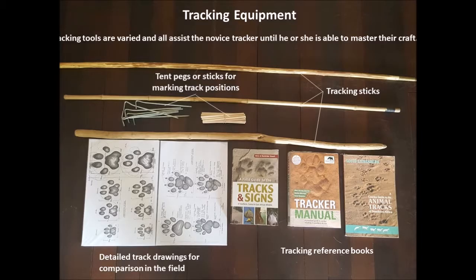Other tools to consider are tracking tools. Many people are interested in tracking — you might want to use tracking sticks for pointing out, circling, and measuring tracks, for example stride length. You might also use pegs to indicate the position of individual tracks. Reference books and field guides help with identification, and you might want a series of drawings to scale of tracks where you can write notes, allowing you to compile a good record of the tracks you find.